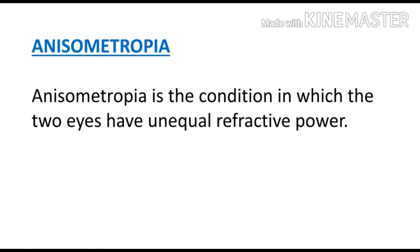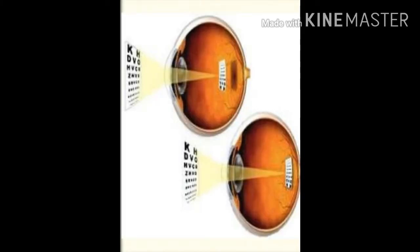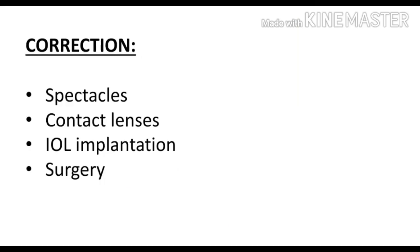Anisometropia is the condition in which the two eyes have unequal refractive power. In anisometropia, the two eyes of the same person have different refractive powers. Correction options include spectacles, contact lenses, intraocular lens implantation, or surgery.